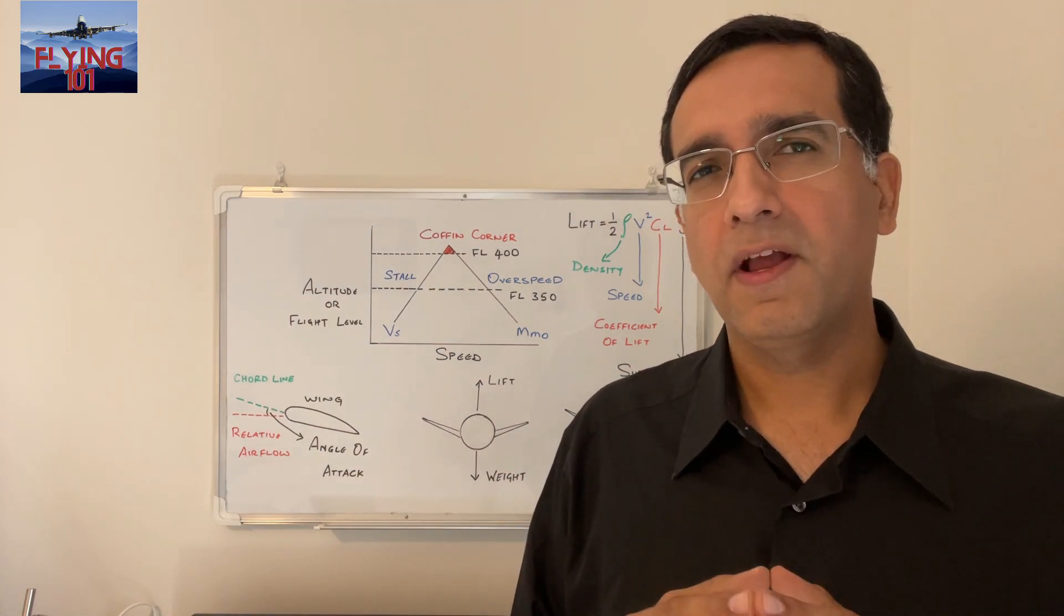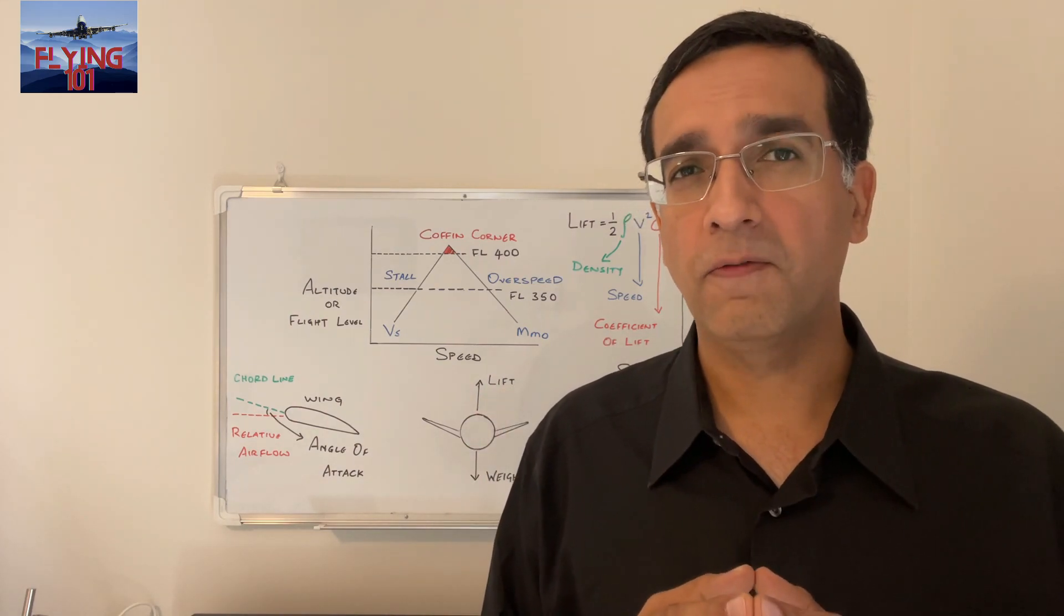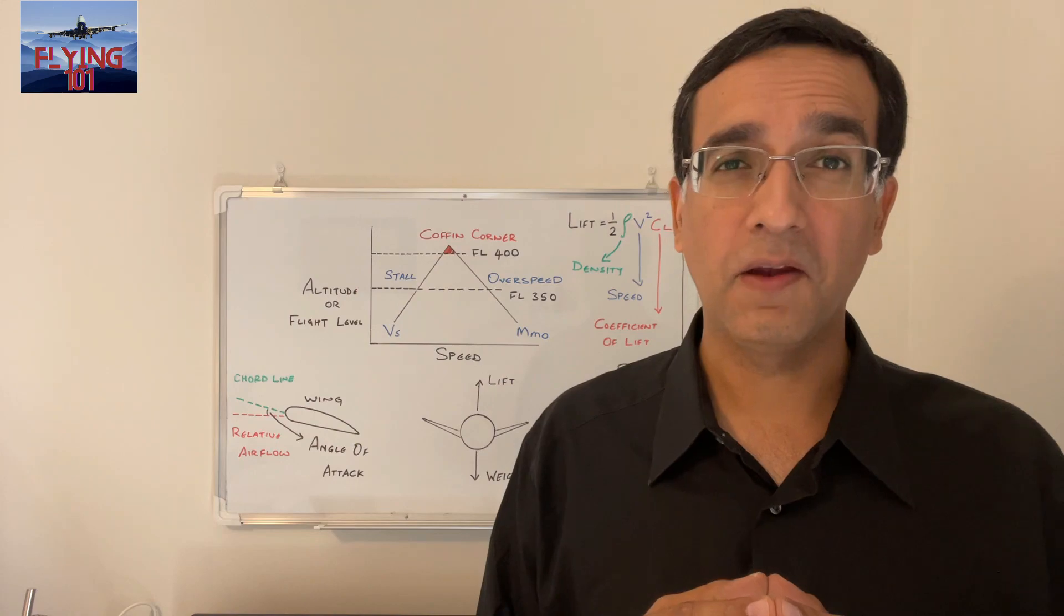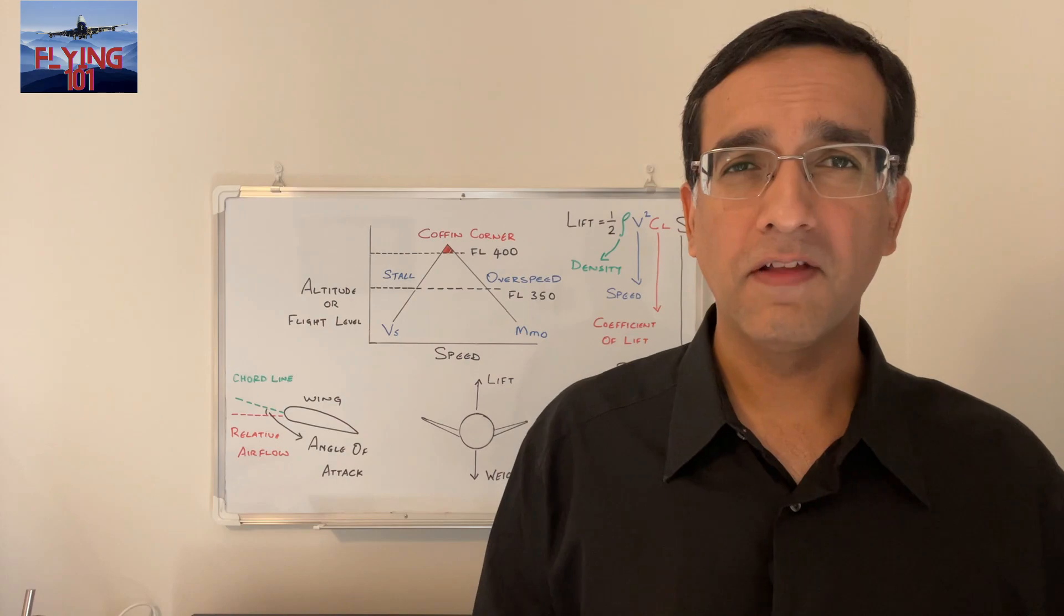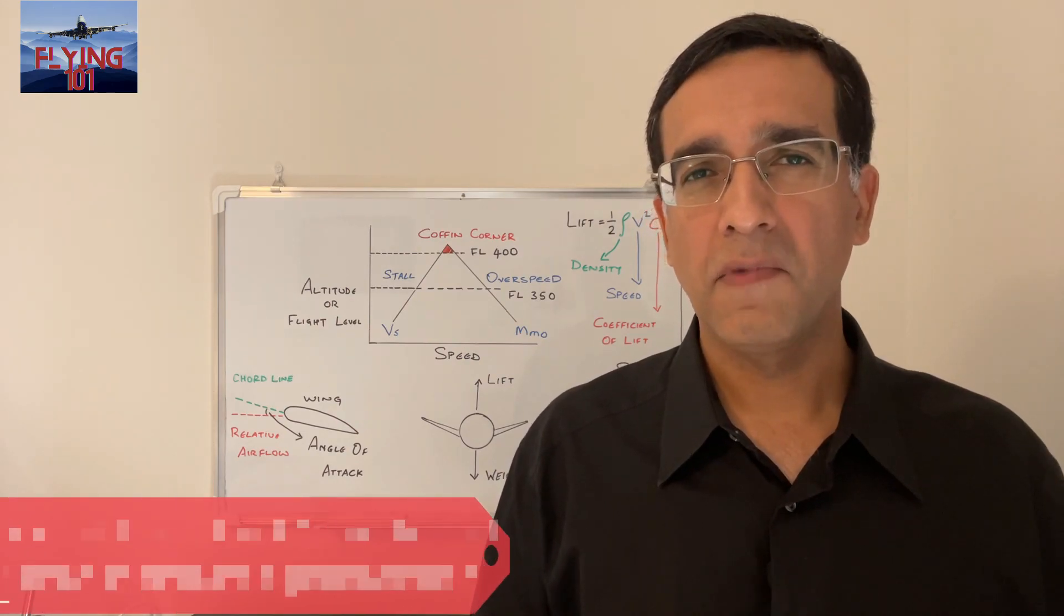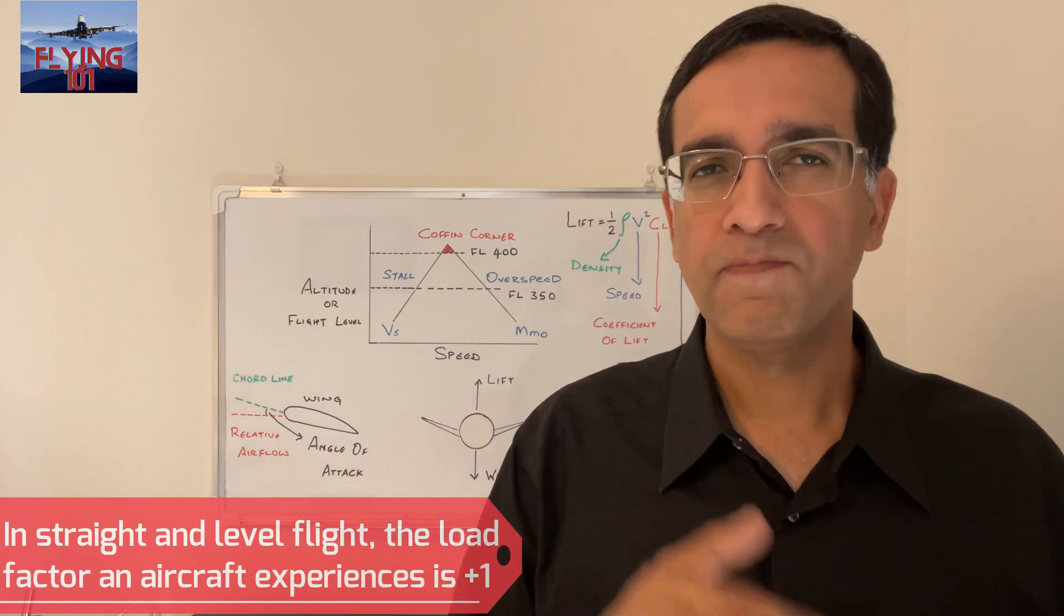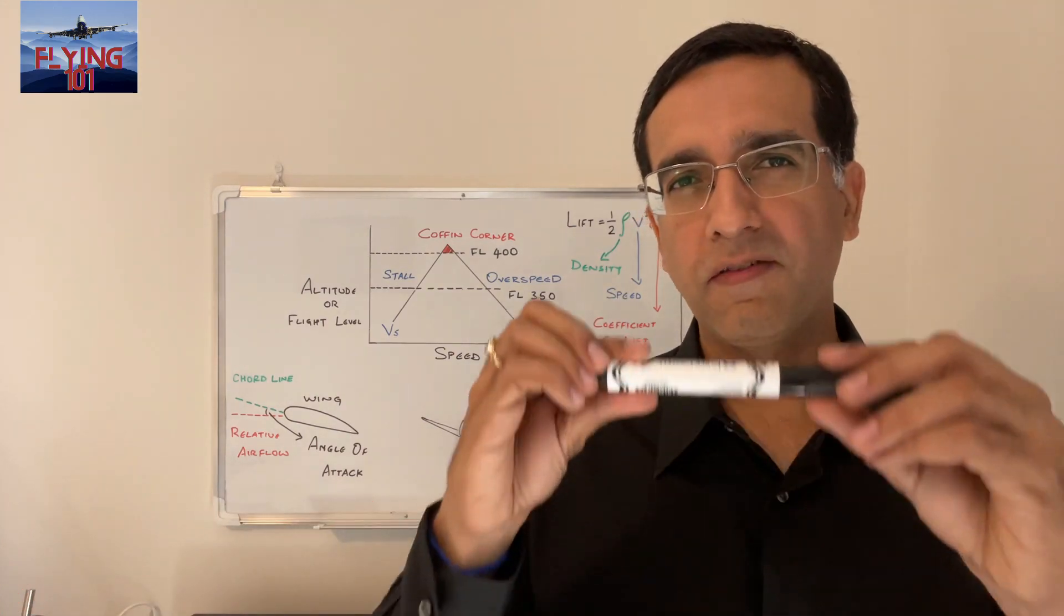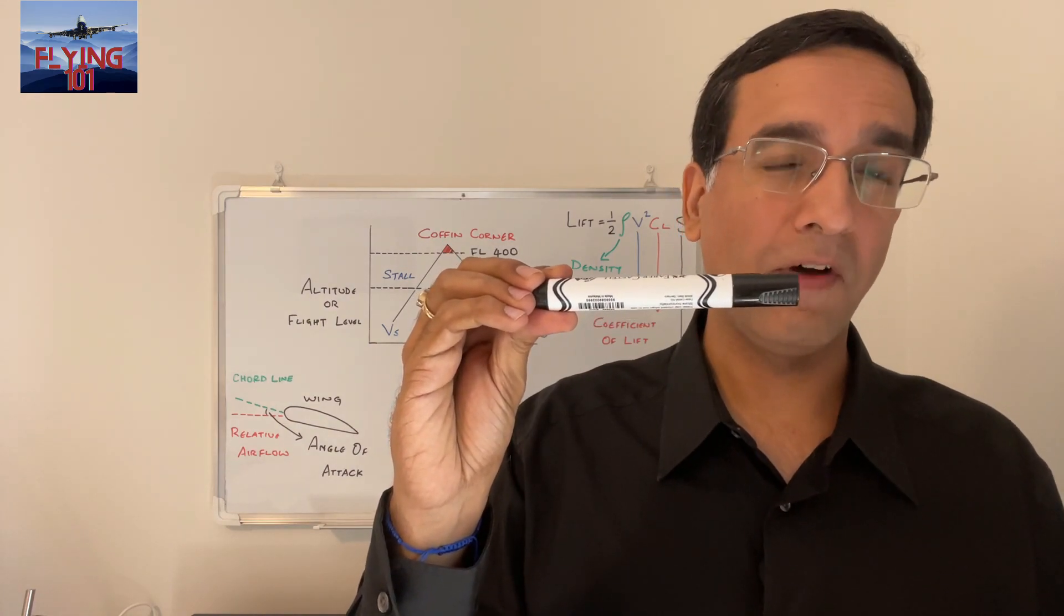The load factor is typically expressed in G units. Now this is not to be confused with the acceleration of gravity which is also indicated with G. During straight and level flight, which means the aircraft is not turning and is maintaining a constant altitude, the load factor is plus one. To explain this simply, if I hold this marker steadily it is experiencing a plus one G load factor.